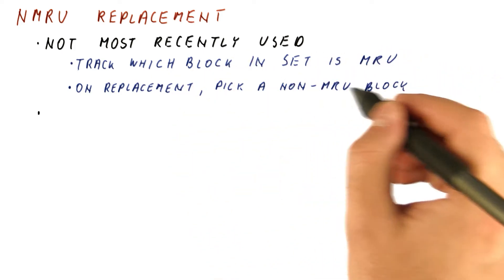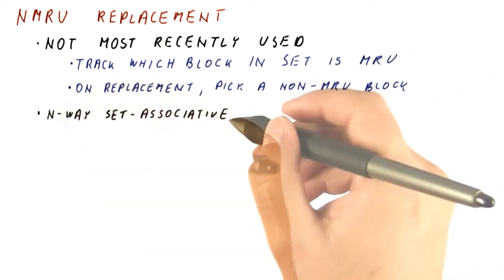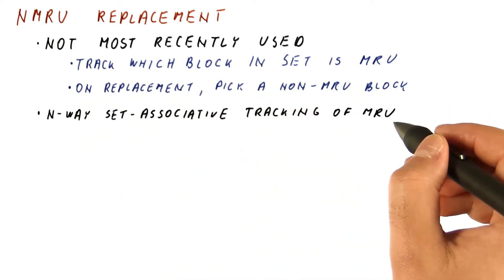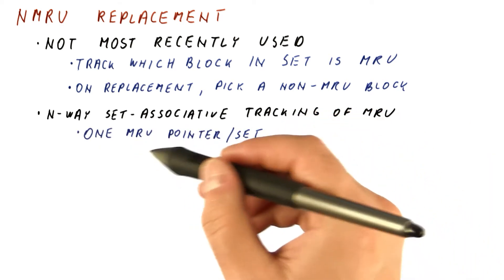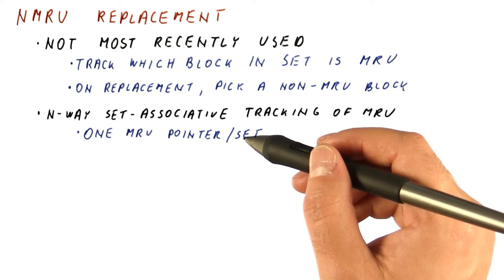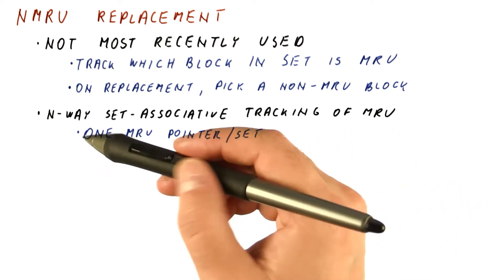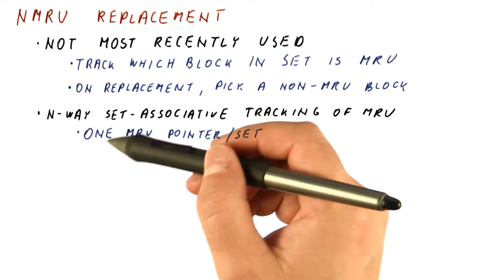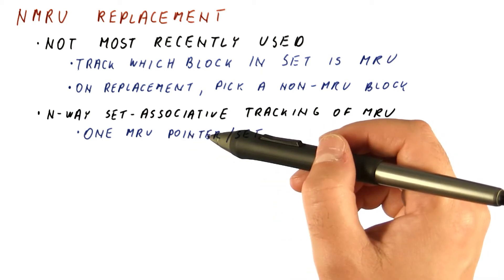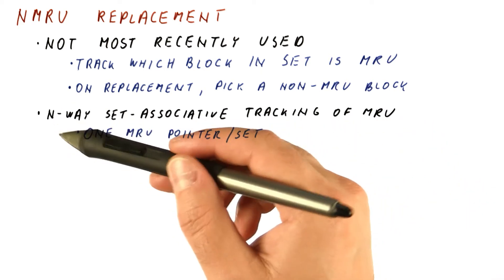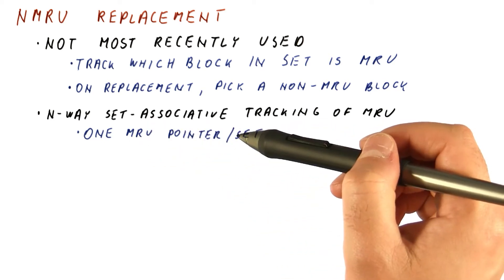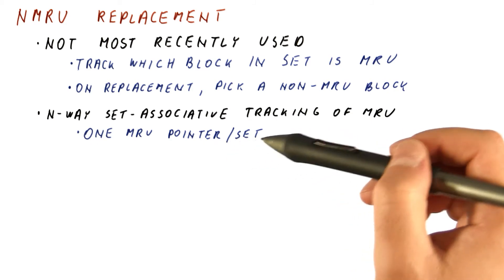How do we track which block is MRU? For an N-way set-associative cache, we need only one MRU pointer per set — we only need to know which block has been the most recently accessed. For a two-way cache, we need just one bit. For a four-way cache, we need a two-bit pointer that tells us which of the four has been the most recently accessed.